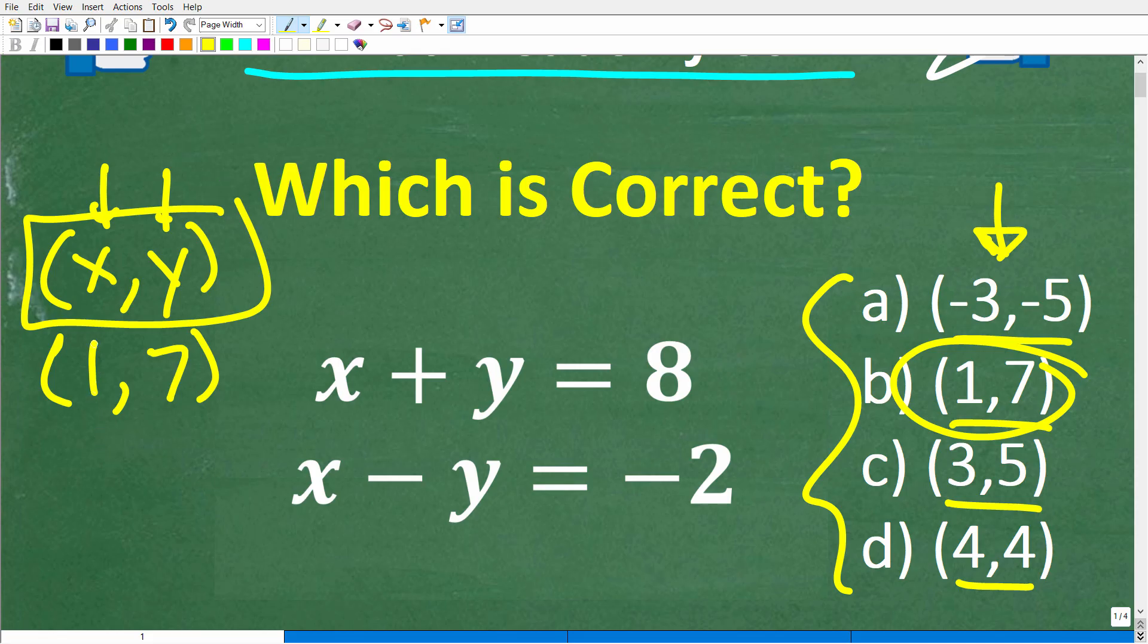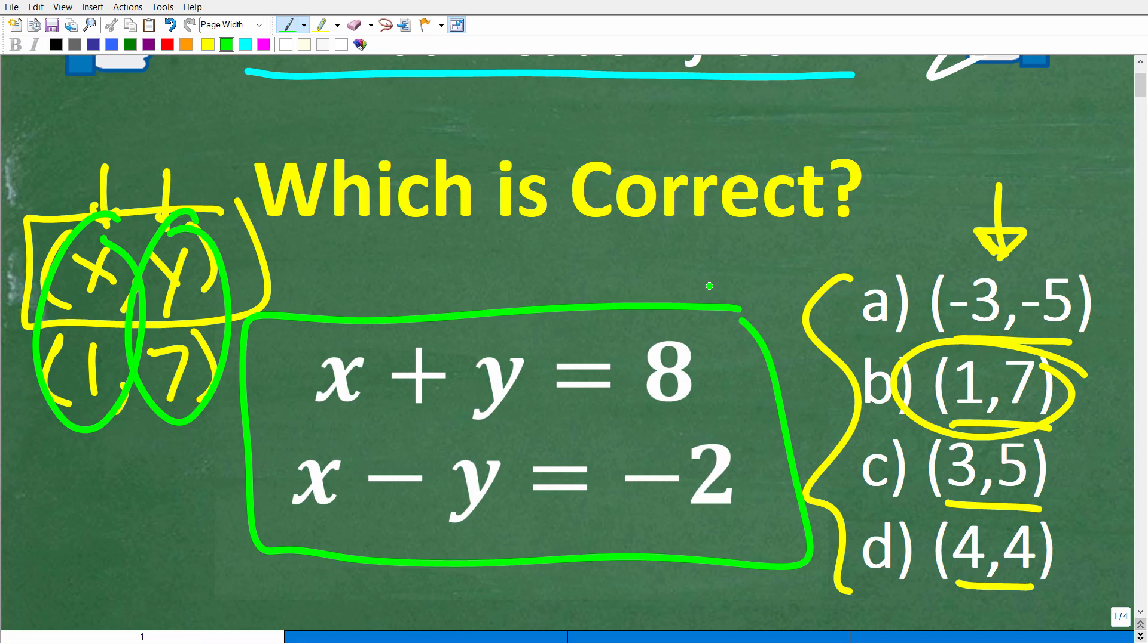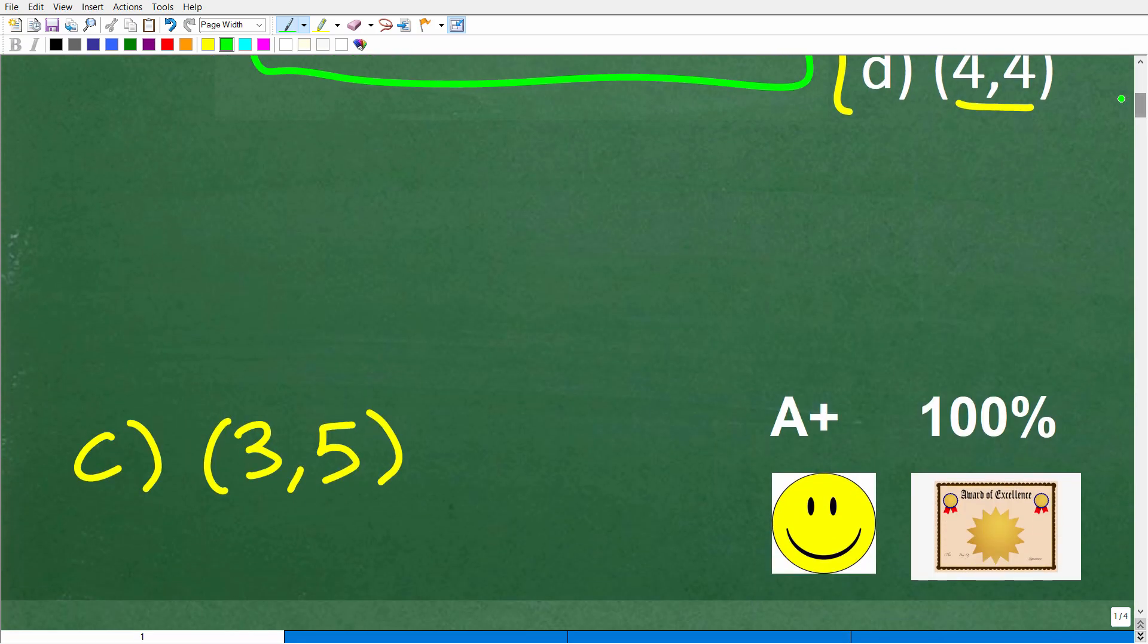For example, for B, this is 1, 7. So our x is 1 and our y is 7. This is what this means. I'll explain what this is all about, but I am giving you a bit of a hint here. The correct answer is C, which is 3, 5.